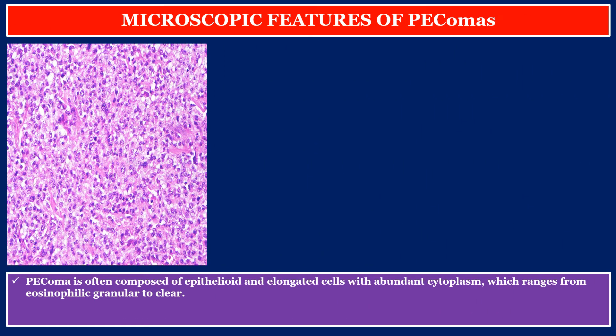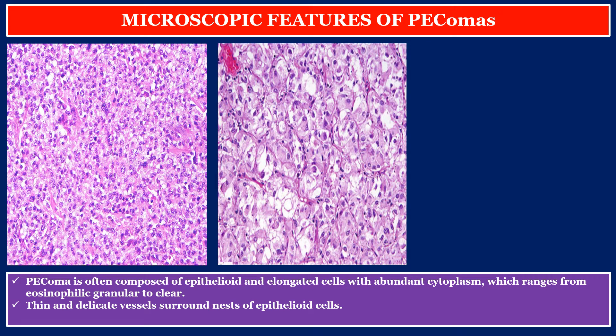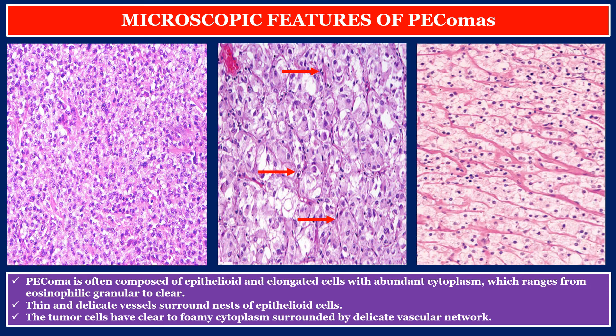High magnification demonstrates relatively monotonous epithelioid cells with granular eosinophilic to clear cytoplasm. Some nuclei have small prominent nucleoli. The PEComa is often composed of epithelioid and elongated cells with abundant cytoplasm ranging from eosinophilic granular to clear. Thin and delicate vessels surround nests of epithelioid cells with eosinophilic to clear cytoplasm.